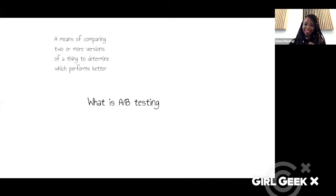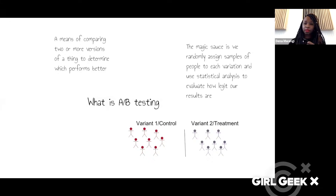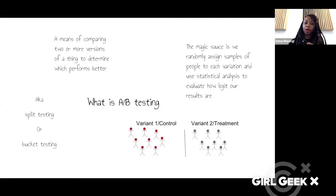So what is A/B testing? Simply put, it's just a way of comparing two or more versions of a thing to determine which performs better. The magic sauce is that we're able to randomly assign samples of people to each variation and use statistical analysis to evaluate how legit our results are. If we do this correctly, we're able to take insights from our small samples and say something meaningful about our larger population. You'll also hear this called split testing or bucket testing.